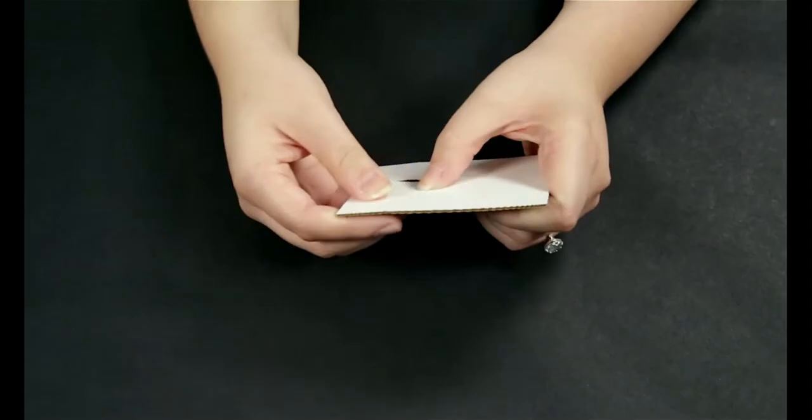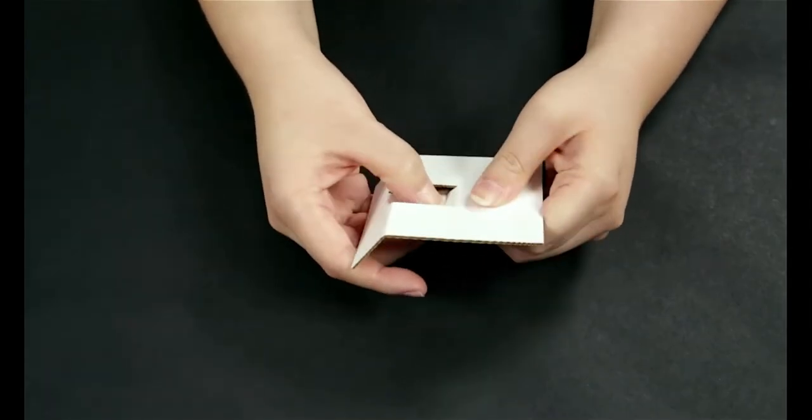Heat the paraffin using the warmer. Fold Part B to make the motor mount.